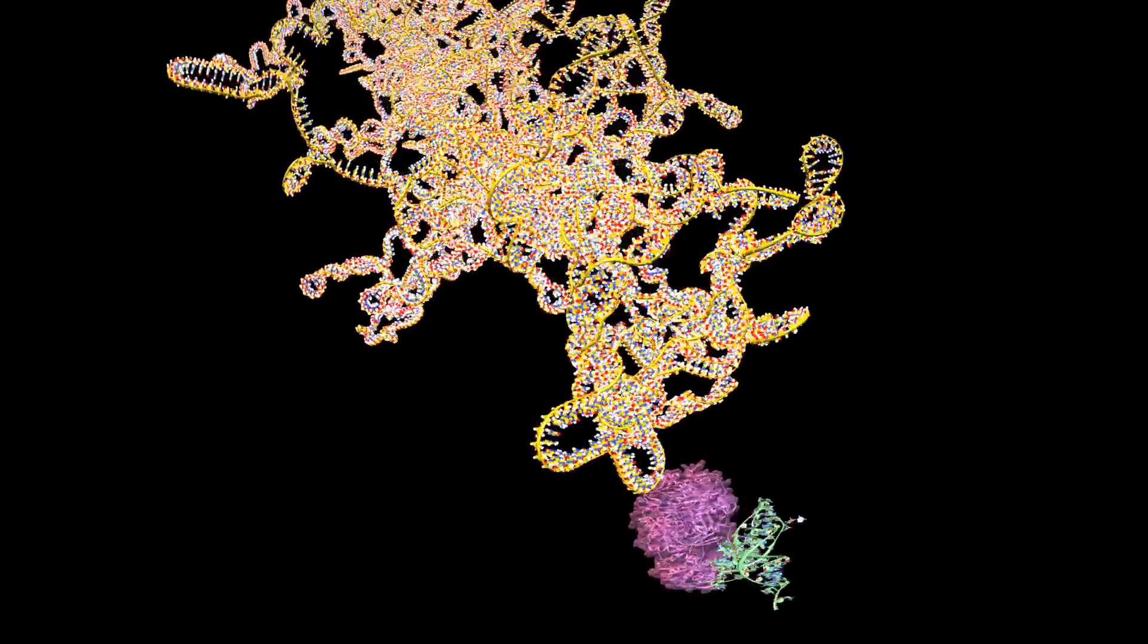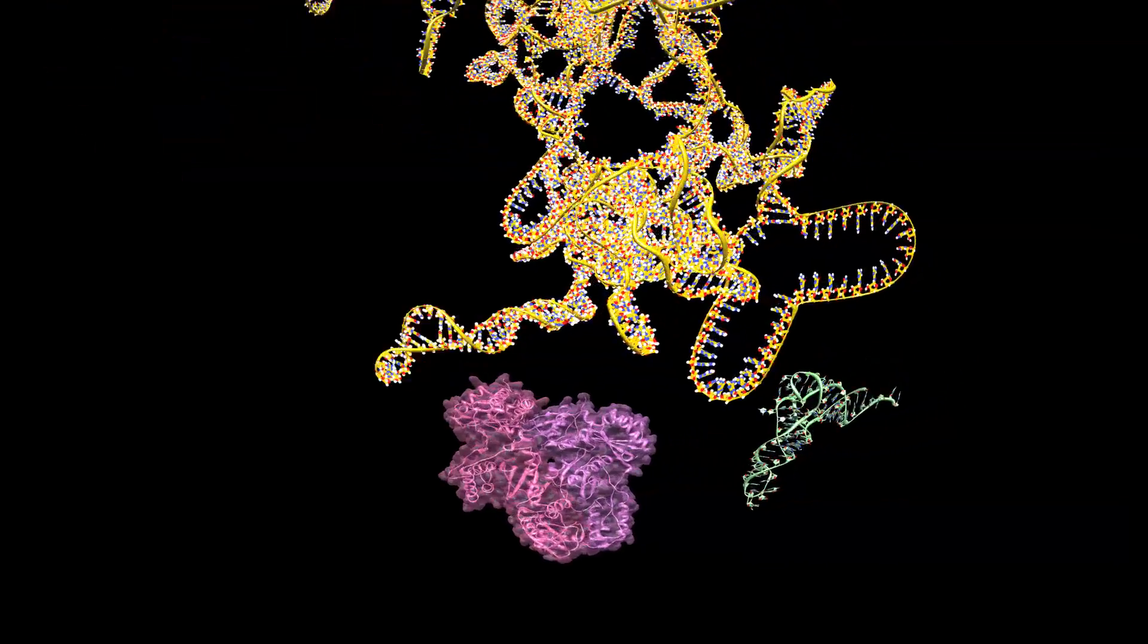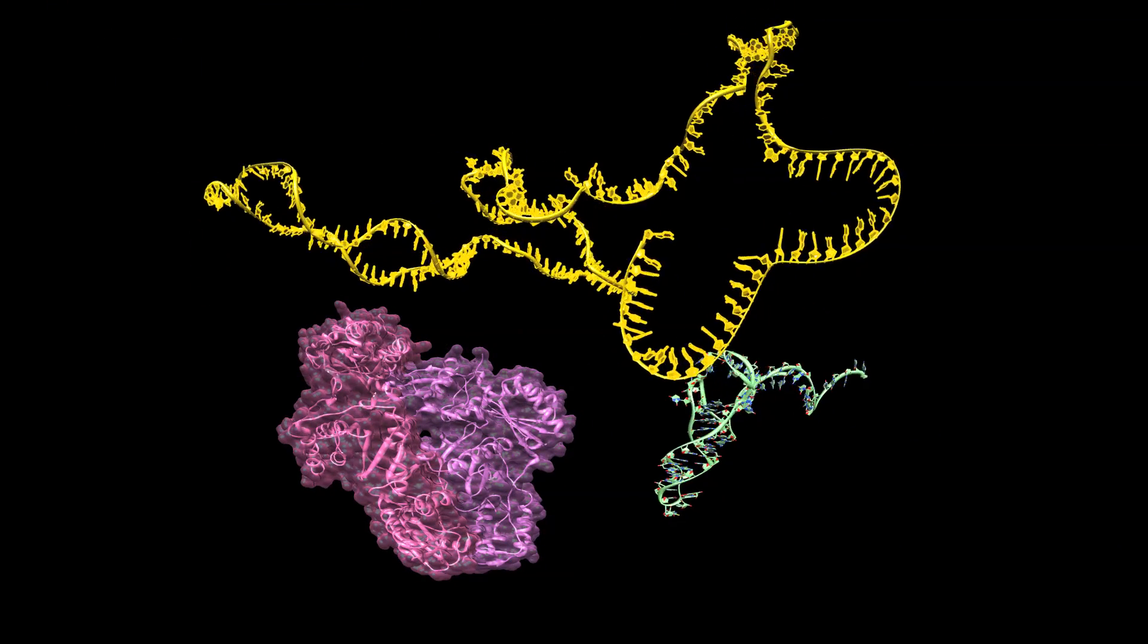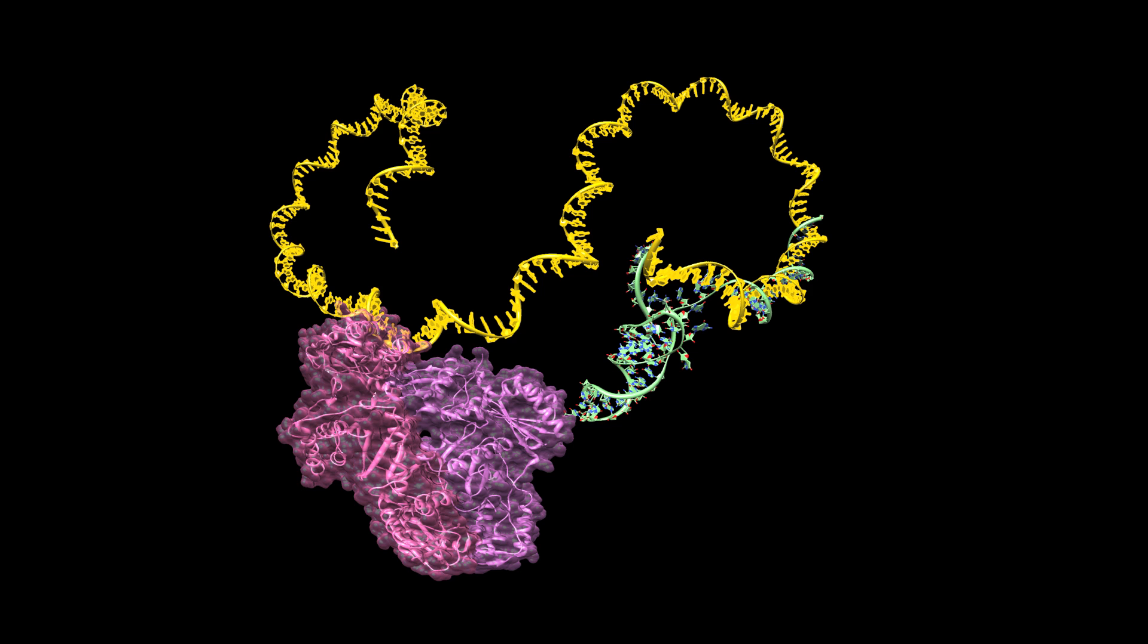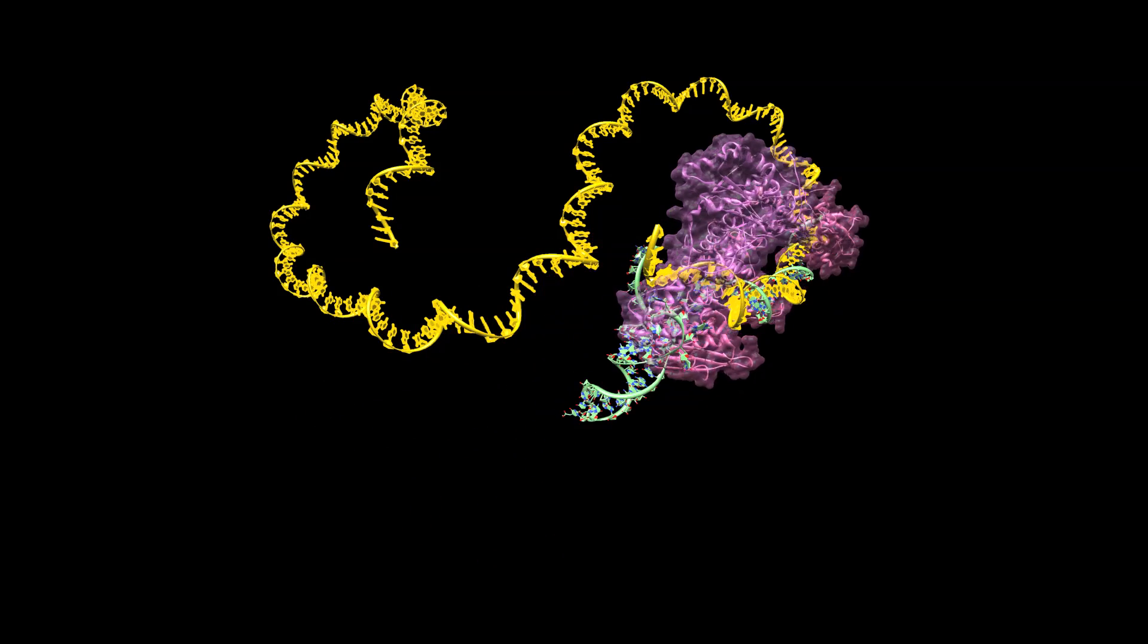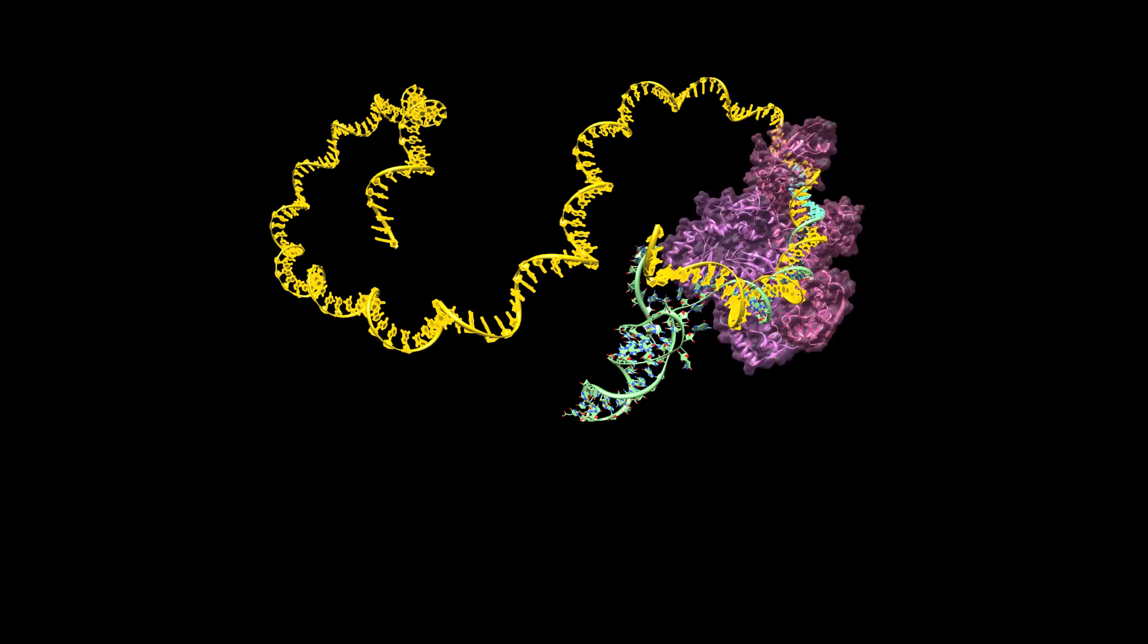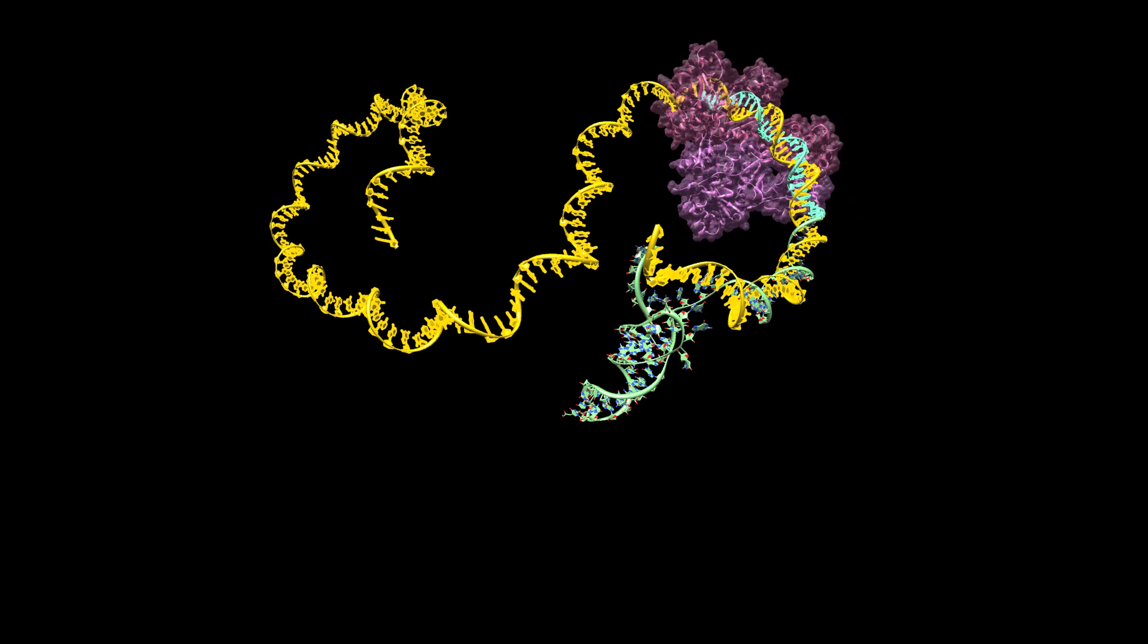An HIV machine called reverse transcriptase builds a DNA copy of the RNA. The copying starts at a small double helix where a human transfer RNA pairs with the viral RNA.